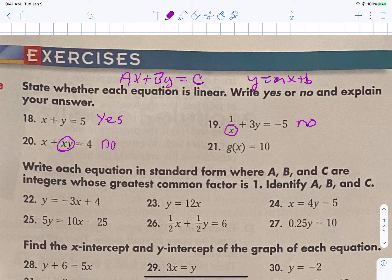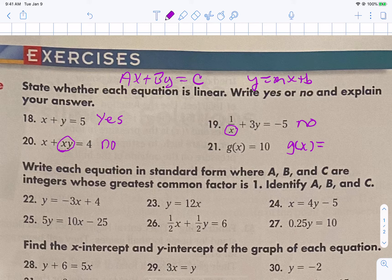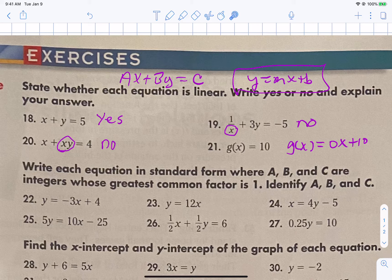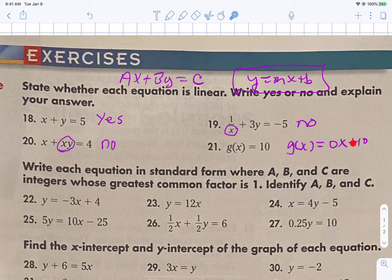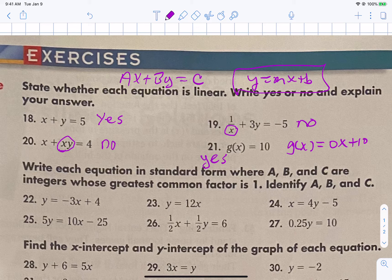21 is a trick. It is a linear equation because we could write it as g of x equals 0x plus 10. It actually is one of these, a slope-intercept function. It is a horizontal line. If you were to put into Desmos y equals 10, you would see a horizontal line at 10. So that one technically is a linear equation.